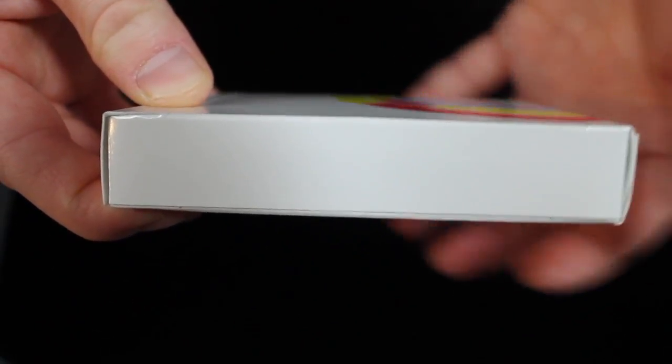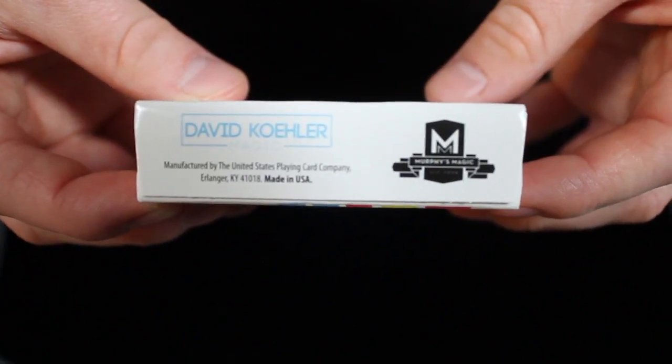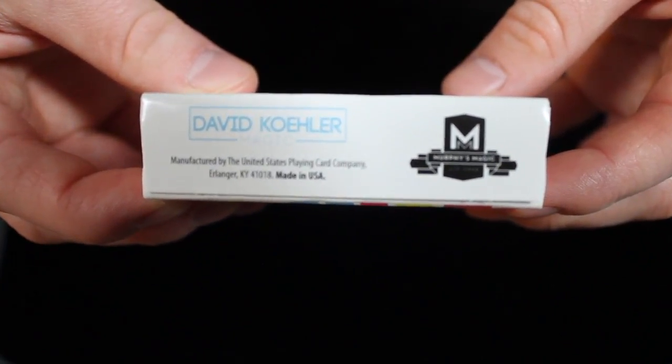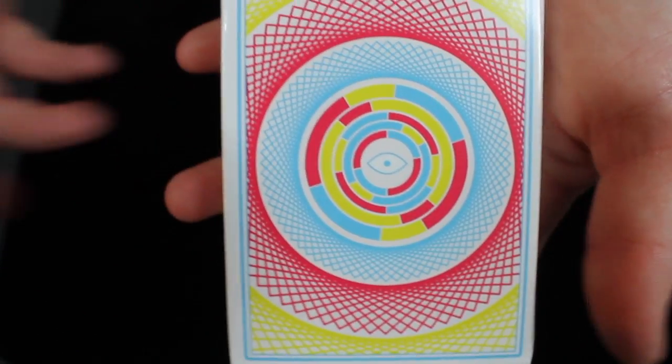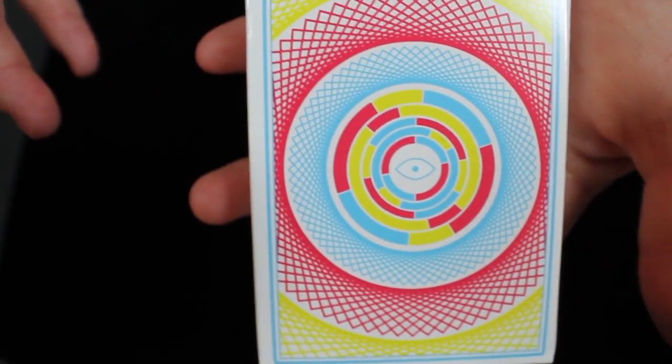This tuck has a minimalistic design having just white on each side. You have some ad copy information for Murphy's Magic and David Kohler, and then on the back we get a glimpse of the back design.